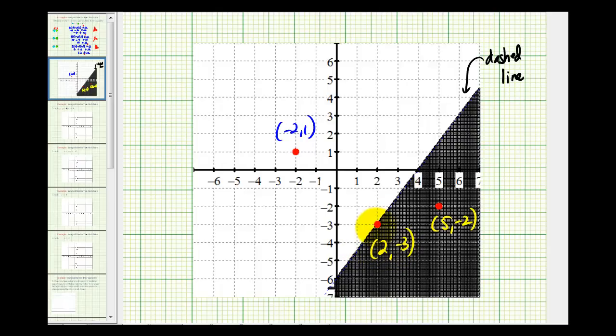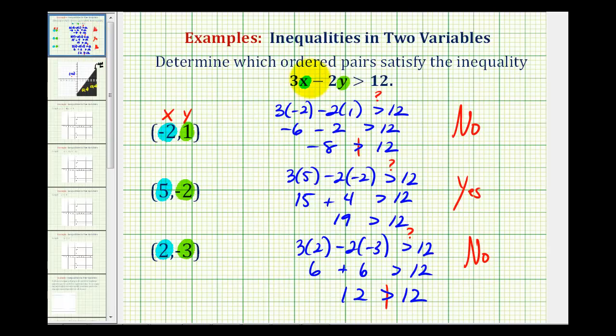Now, if it was a solid line, meaning we have the inequality 3x minus 2y is greater than or equal to 12, then this last ordered pair would have satisfied the inequality. But because the line was dashed, it did not. I hope you found this helpful.